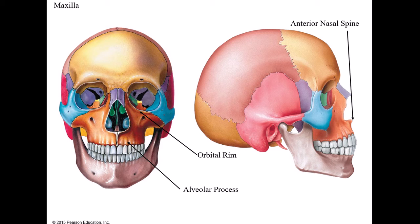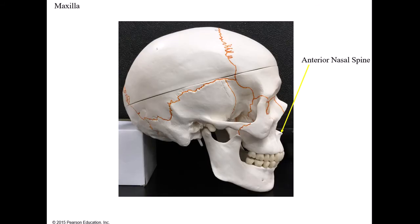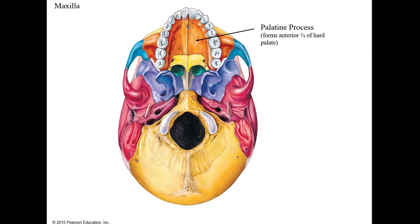The facial bones that form the upper jaw are known as the maxilla. We have two of them - one on the left side and one on the right side. Landmarks to locate include the orbital rim, the alveolar process which holds the teeth, and the anterior nasal spine - a small piece of bone sticking out in front, easily located on the skull model.